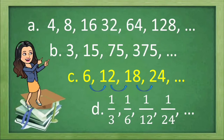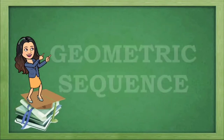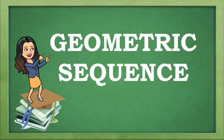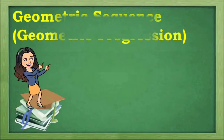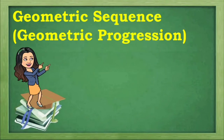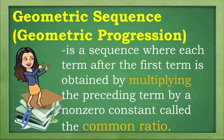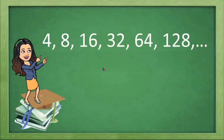What about letters A, B, and D? They are said to be geometric sequences. A geometric sequence or geometric progression is a sequence where each term after the first term is obtained by multiplying the preceding term by a non-zero constant called the common ratio. Here is an example.